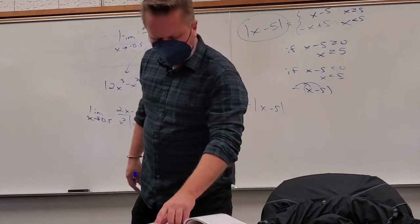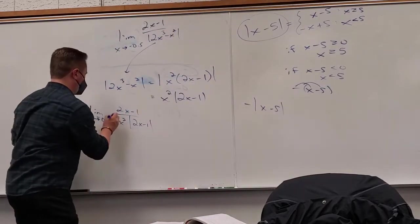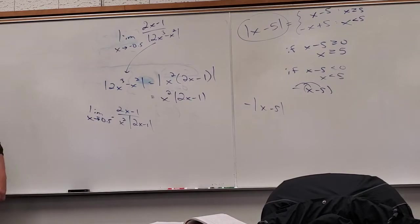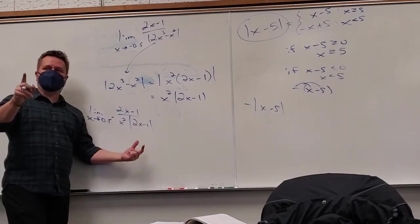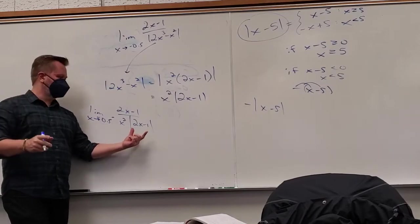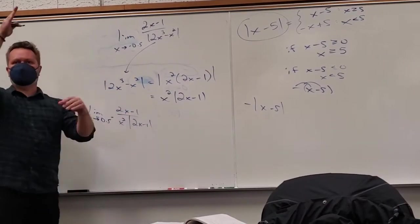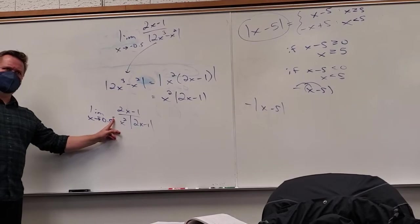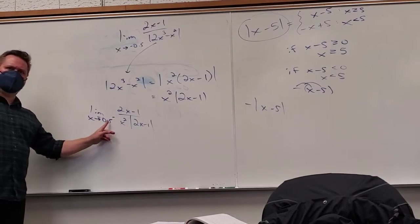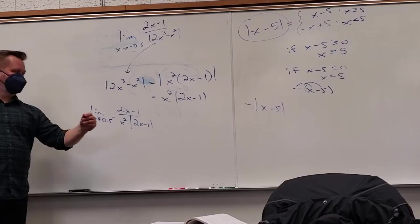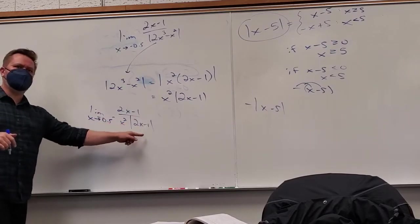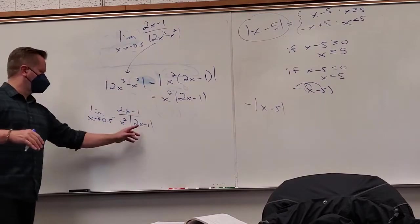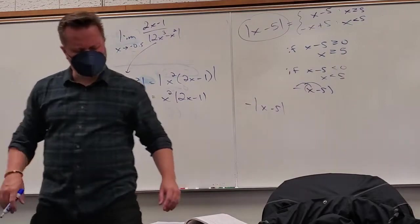This limit is from the left. Does something scream out that you can do? Cancel — but you can't do it right now, because there's no absolute value of (2x − 1) on the top. They're not the same thing, so they won't cancel yet.